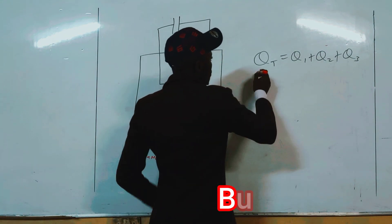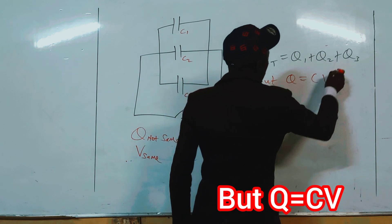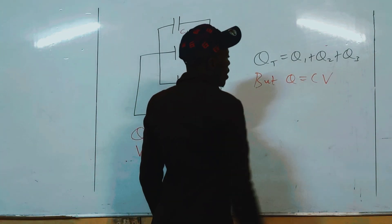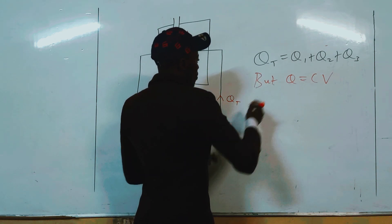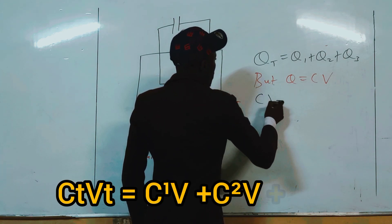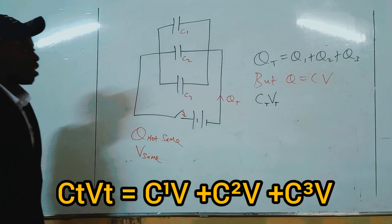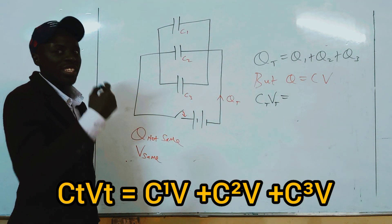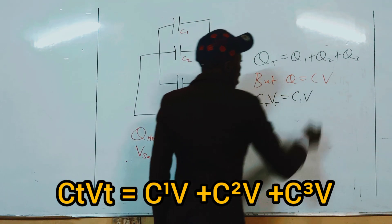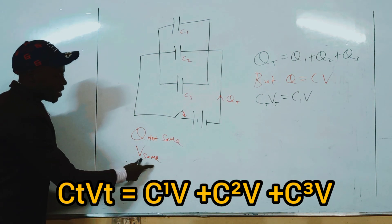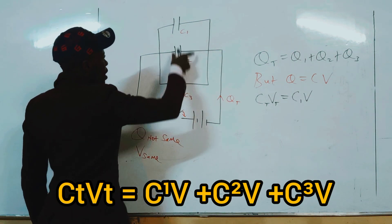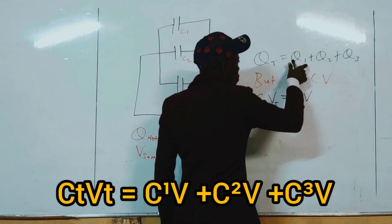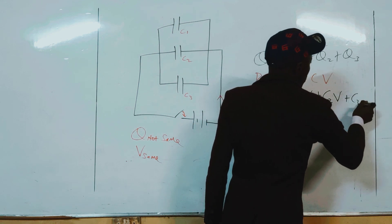Since Q equals CV, wherever we have charge we substitute with CV. So QT becomes CT times VT — total capacitance times total voltage. Q1 becomes C1V, Q2 becomes C2V, and Q3 becomes C3V. We do not have V1, V2, and V3 because voltage is the same everywhere — the voltage across each capacitor is the same as the total voltage. So this gives us CT·V = C1V + C2V + C3V.